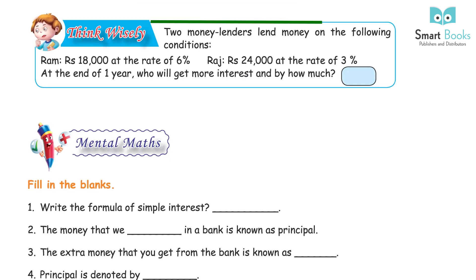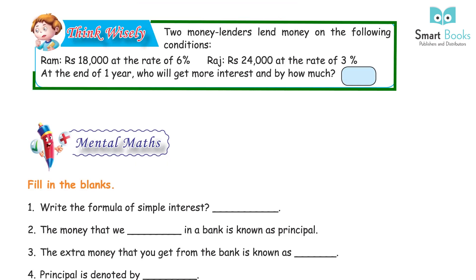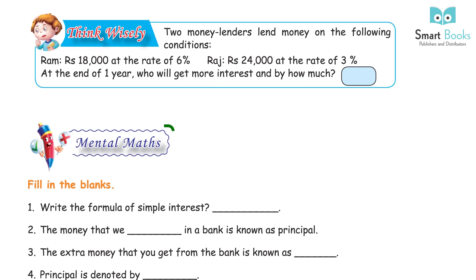Think Wisely: Two money lenders lend money on the following conditions — Ram: Rs 18,000 at the rate of 6%; Raj: Rs 24,000 at the rate of 3%. At the end of one year, who will get more interest and by how much? Answer: Raj.